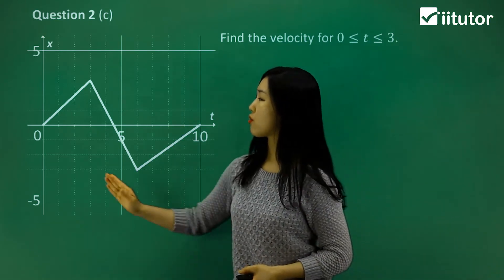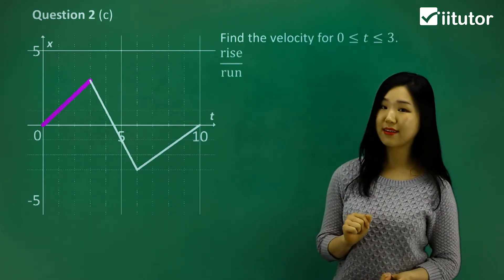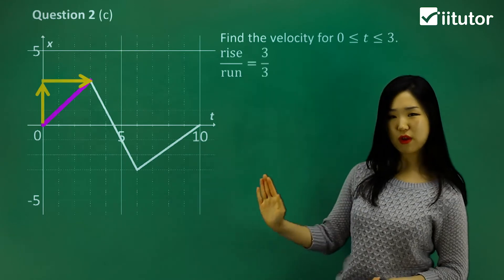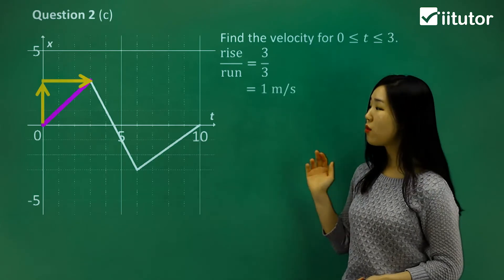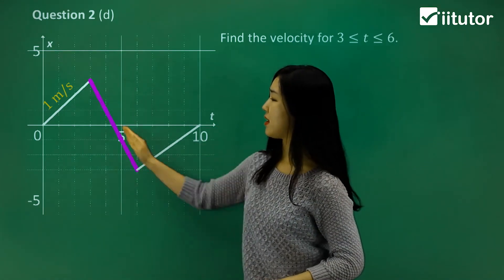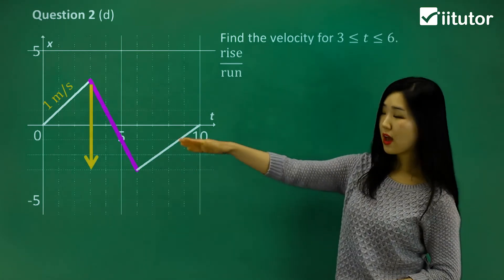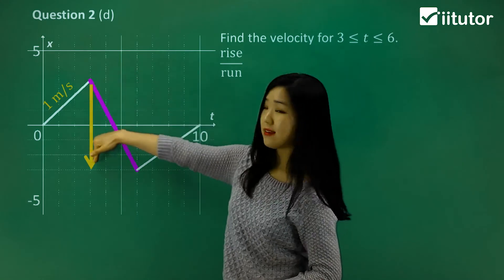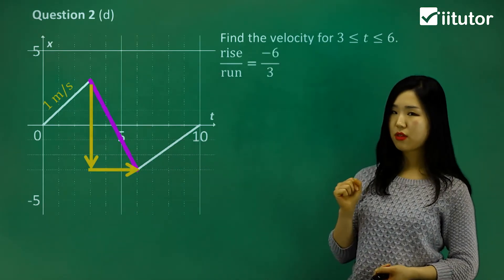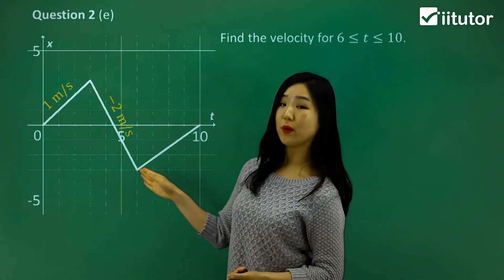We're going to look for the velocity from 0 to 3 seconds. Velocity is the rate — rise over run, the gradient. The rise is going up by 3 and the run is 3 across, so 3 divided by 3 is 1 — so 1 meters per second for that section. Now they ask for 3 to 6, which is the next part. The rise is going down, so it's negative 6 divided by 3 — that's negative 2 meters per second. It makes sense because it's going backwards, so the velocity is negative.